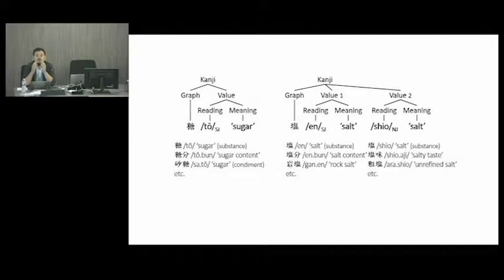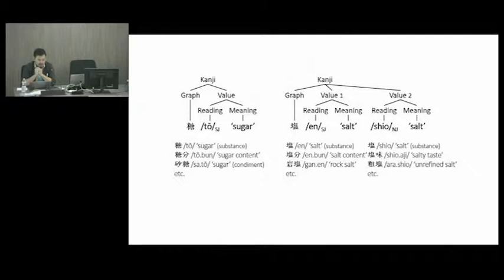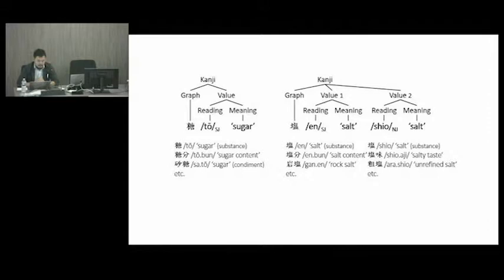This graph has only one value. In contrast, the second example on the right-hand side shows the graph for en, which means salt, or shio, which also means salt. En is the Sino-Japanese reading, whereas shio is the native Japanese one. As you can see, in many cases the Sino-Japanese and native Japanese readings have the same or related meanings, because the native Japanese is basically the translation of the Chinese vocabulary item. The graph can be used by itself or in combination with other graphs to represent other words.